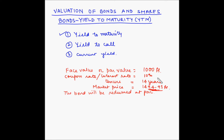The returns will include 10% of 1000 rupees as the interest and the maturity value which the investor is going to get at the end of the tenure. This rate of return that we are going to find out is known as the yield to maturity — basically, what will be the yield of the bond till the time it matures.